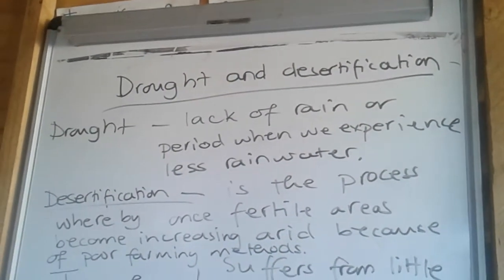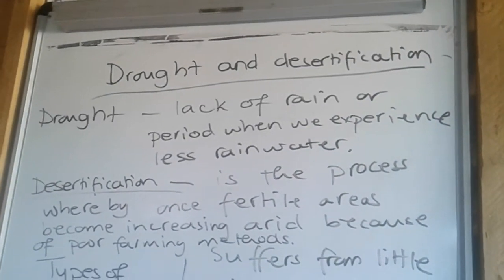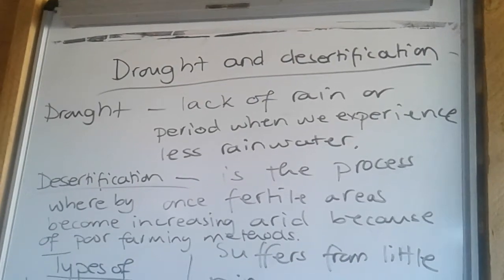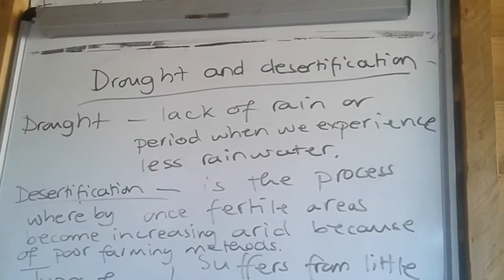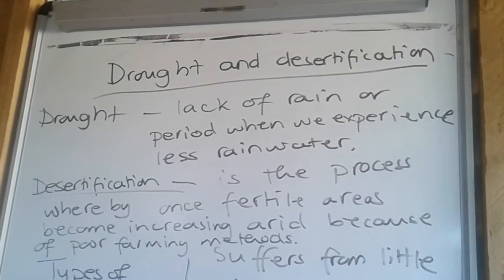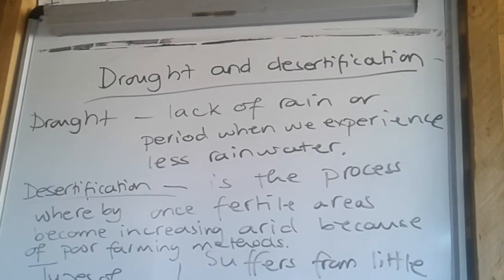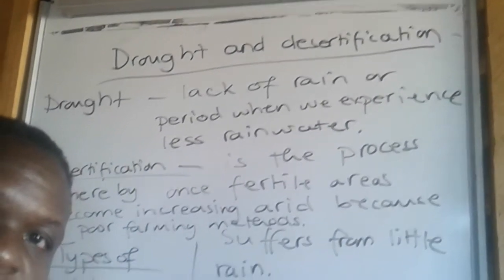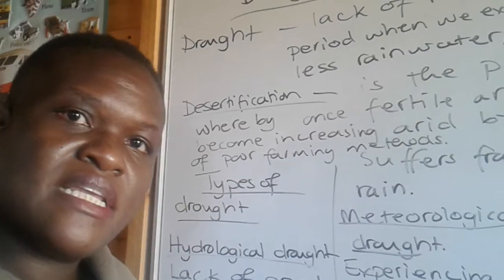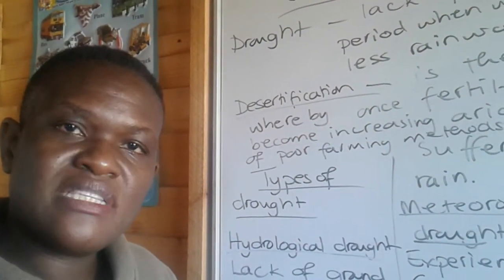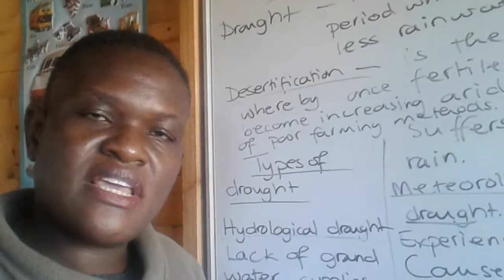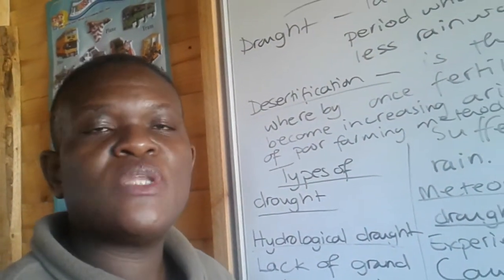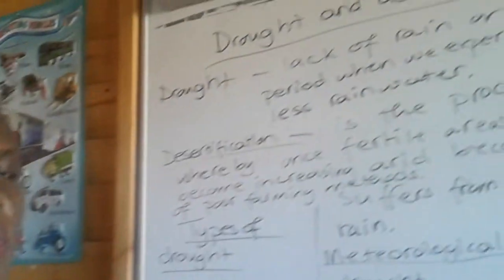Whenever we look at drought, we are looking at a place that is experiencing lack of rainfall, or a place that is experiencing less rainfall annually. Desertification is a process whereby fertile areas are becoming drier and drier. We simplify it by saying that desertification is basically the spread of desert from desert areas to non-desert areas.